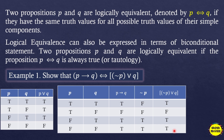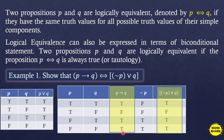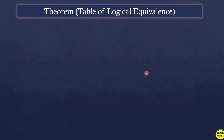Looking at the third and fifth columns of our truth table, they have the same truth values. Therefore, we can say that 'if p then q' is equivalent to 'not p or q'. That is one example of logical equivalence.